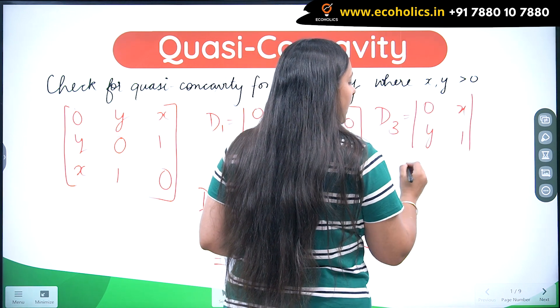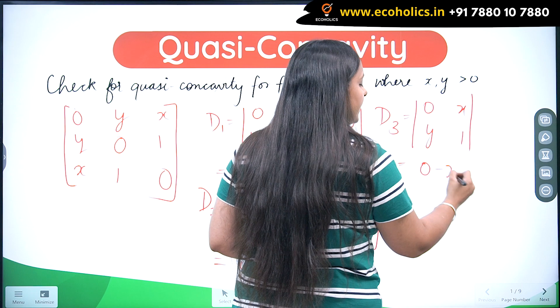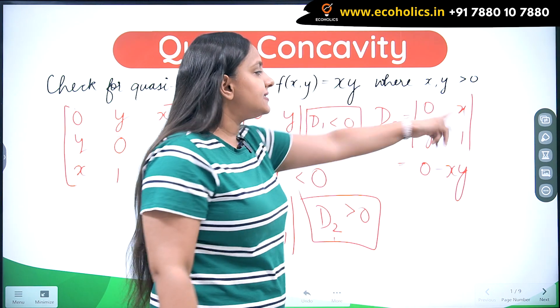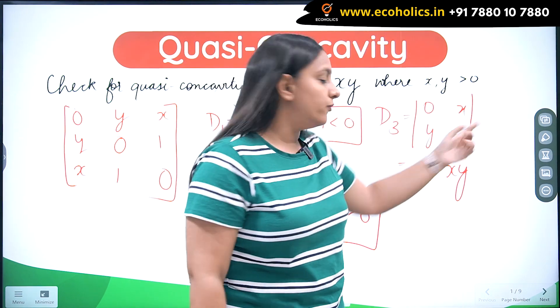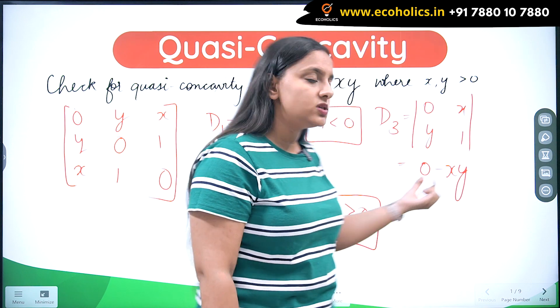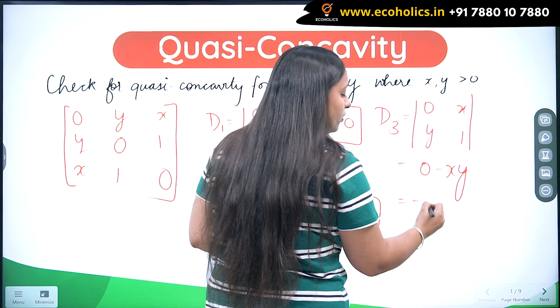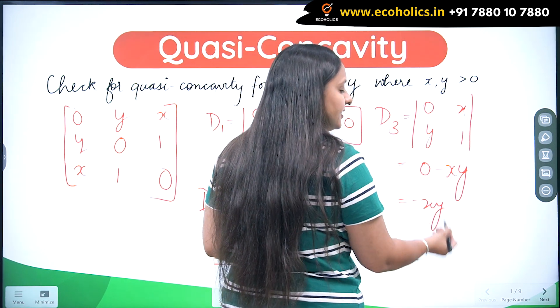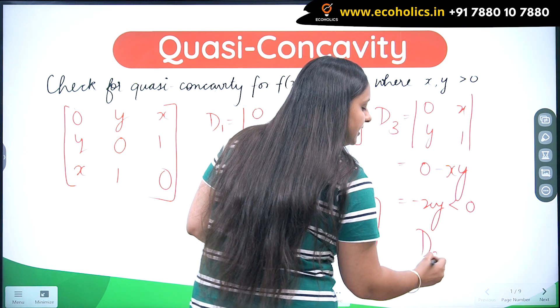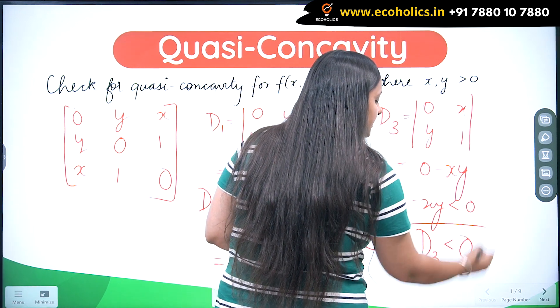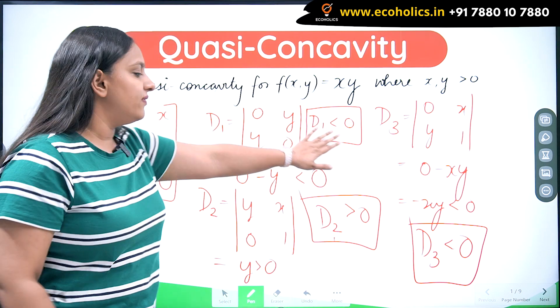When I check, I am going to get 0 minus xy. Now since x and y both are positive, their product will also be positive, but I have a negative in front of this, so it makes the minus xy strictly less than 0. Hence, D3 is also strictly less than 0.